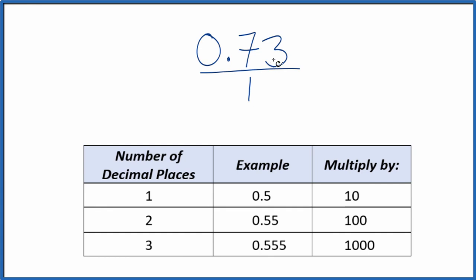I need to get the 0.73 here to a whole number, and I see I have two decimal places. So two decimal places, I'm going to multiply the numerator here by 100. So 100 times 0.73, that equals 73, and that's a whole number.